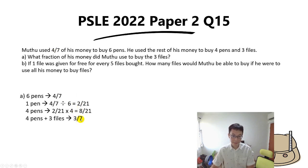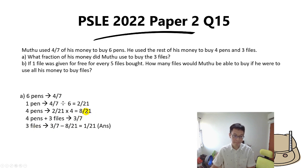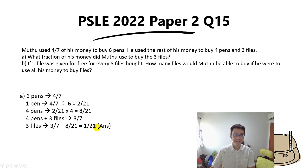To find the fraction for three files, you simply take 3/7 minus the fraction for the four pens. So three files will be 3/7 minus 8/21, and the answer is 1/21.